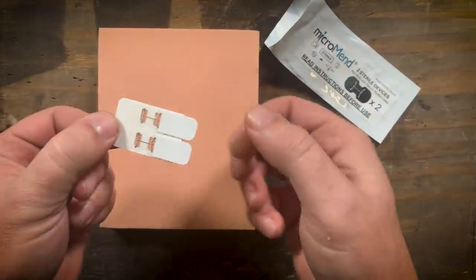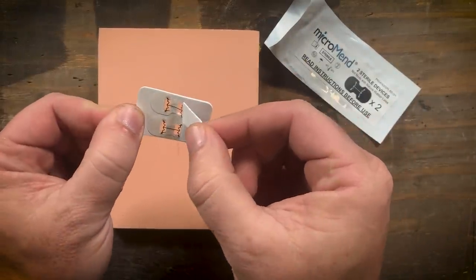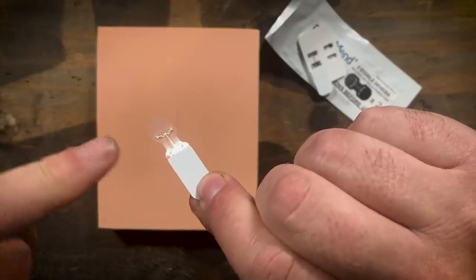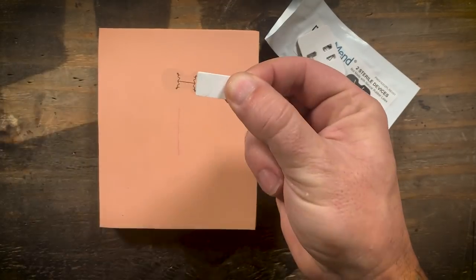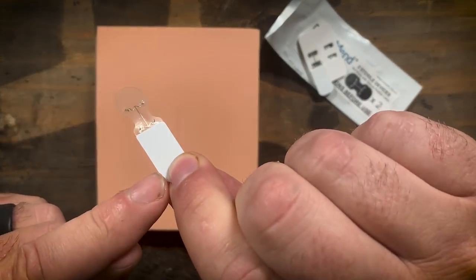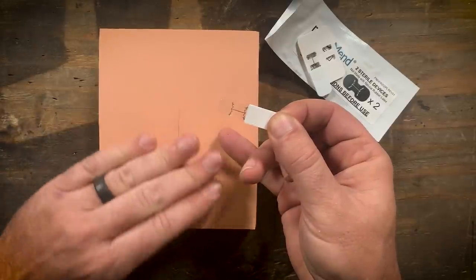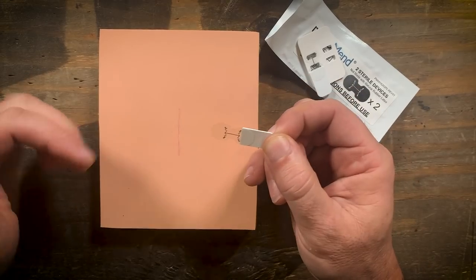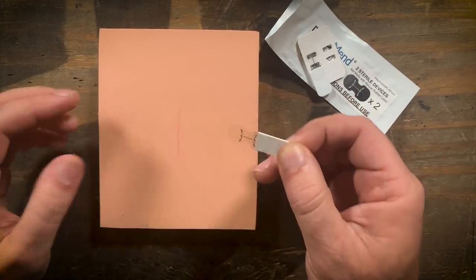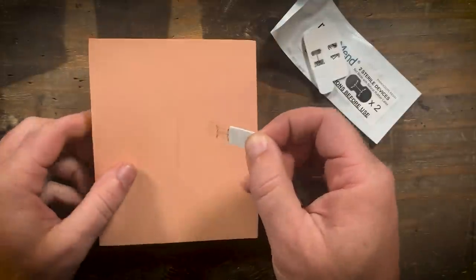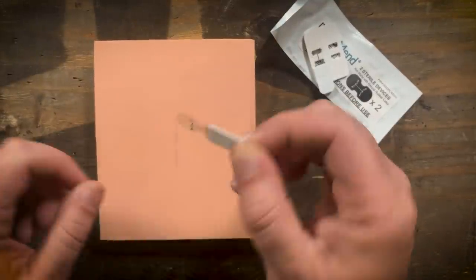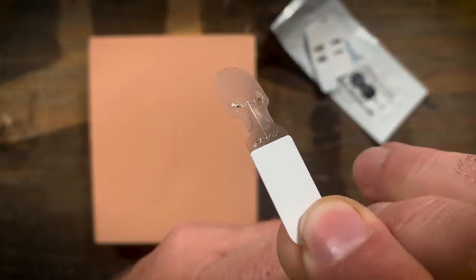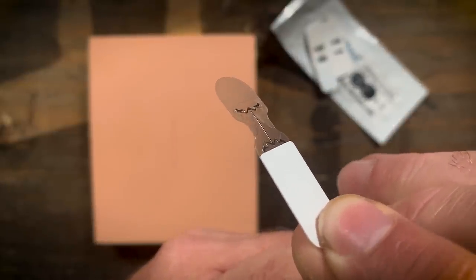What you want to do is peel one of these off. This is the sticky side. You don't want to touch this, obviously only use one hand and hold it with the tab. It's recommended that the area is dry so you want to get the bleeding under control, get it clean and let it dry so that you get the best adhesion possible with this right here.